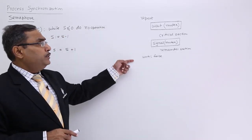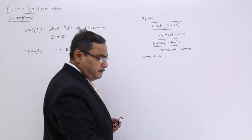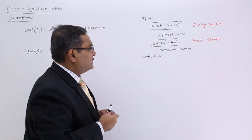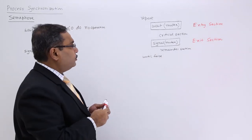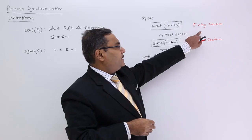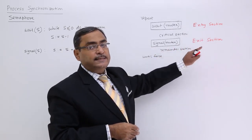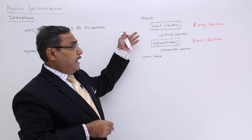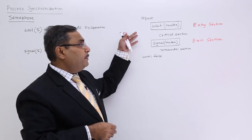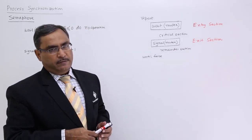This is the code we have written. In the previous section, we wrote that wait was there as the entry section and signal was there as the exit section. These two atomic operations — wait and signal — have replaced the entry section and exit section respectively.